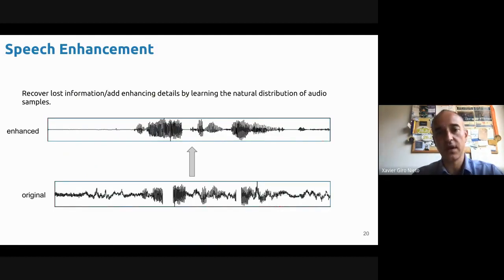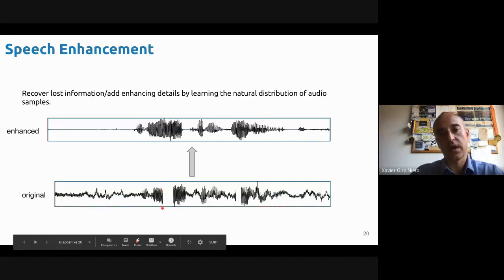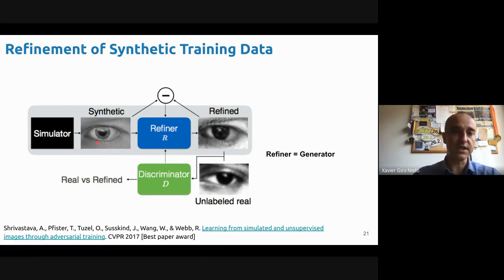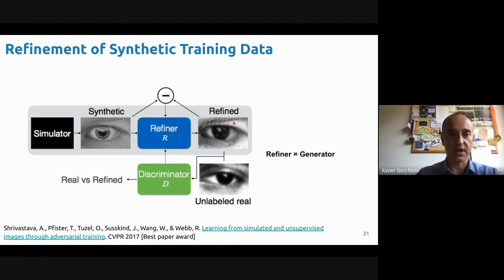Another interesting application is speech enhancement. In many situations, spoken words suffer distortion — maybe there's a cut in communication, data packet loss on a phone call, or missing data in a recording. It's possible to reconstruct or clean up the data with generative models. This was one of the best paper awards at CVPR 2017. Another application from Apple: they wanted a large dataset for eyes. The eye is synthetic, and they used a GAN to refine the synthetic data, so they could generate any eye gaze they wanted and then refine it to make it realistic.